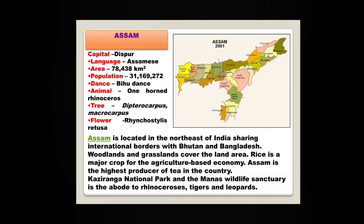Assam — the capital is Dispur. Assam is located in the northeast of India sharing international borders with Bhutan and Bangladesh. Assam is the highest producer of tea in the country. Kaziranga National Park and the Manas Wildlife Sanctuary is the abode of rhinoceros, tigers and leopards. Kaziranga National Park is the only park where we can find the one-horned rhinoceros.